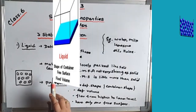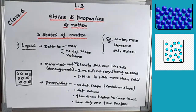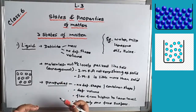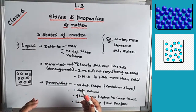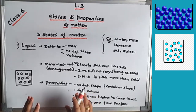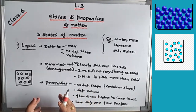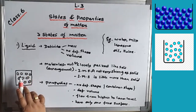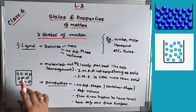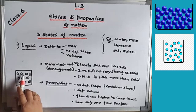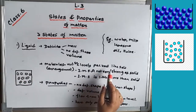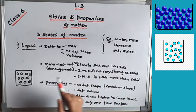Now the molecular arrangement of liquid, compared with solid: in solid the molecules are closely and tightly packed, but in liquid there is no such compactness — there is a slight gap between the molecules. The molecules are not so closely packed as in solid.